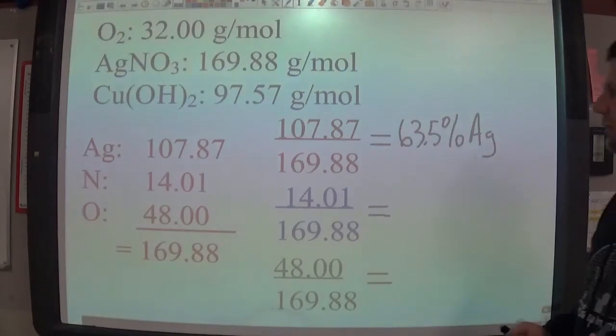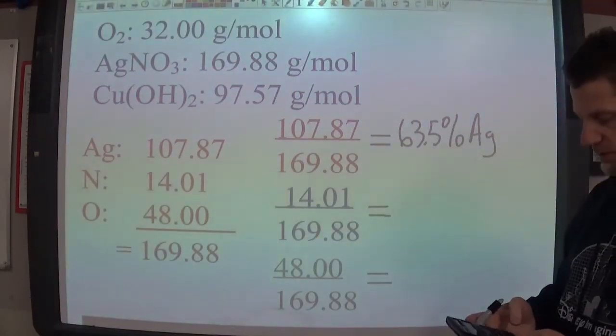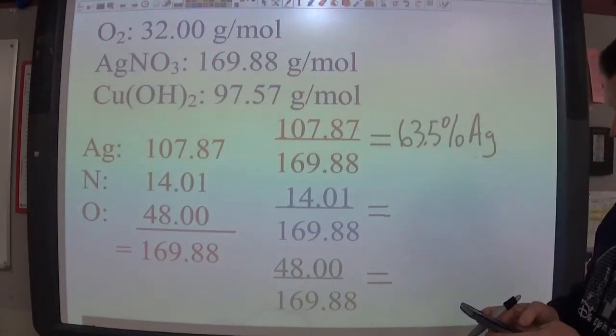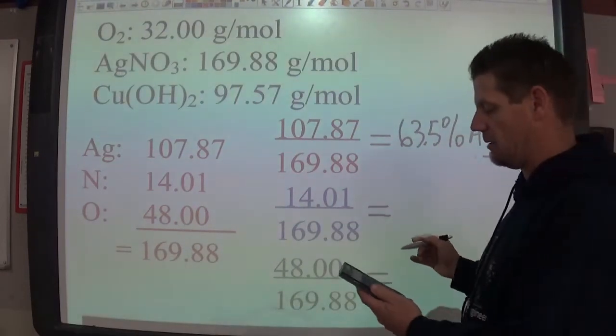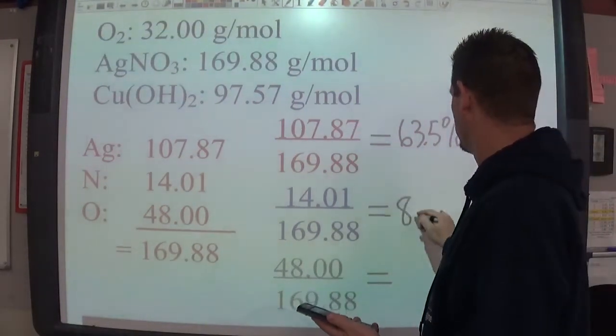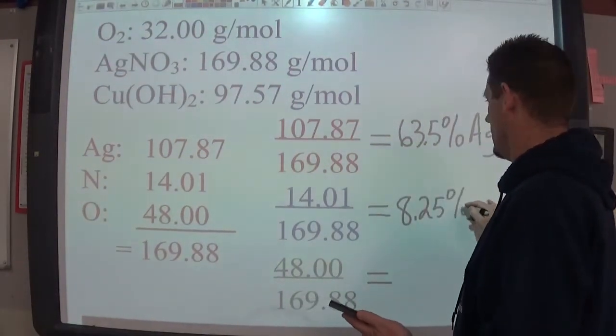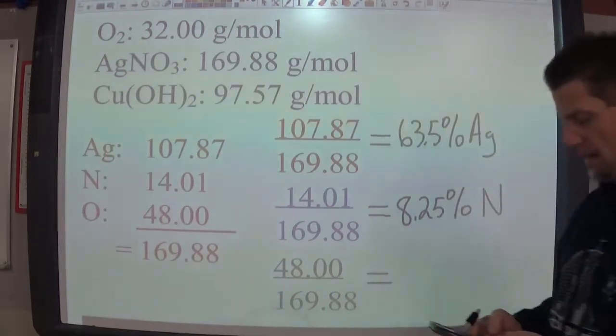This is going to be 63.5% silver, 63.5% silver. For nitrogen, we take the 14.01 divided by 169.88 and we get 8.25%. And that is of nitrogen.